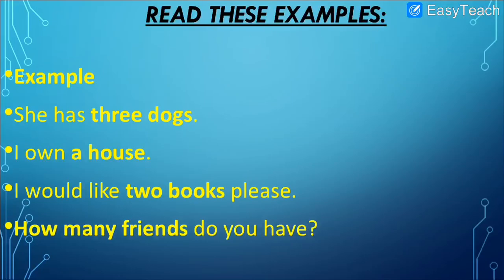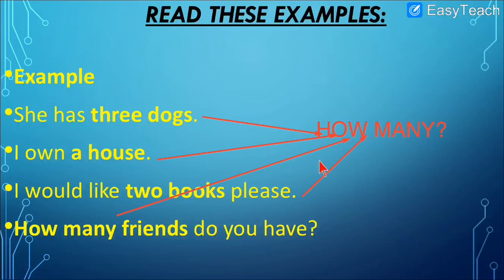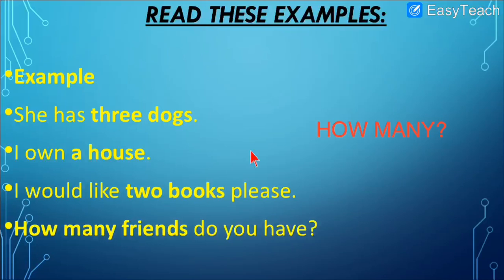Examples of countable nouns in sentences: 'She has three dogs' — how many dogs? Three dogs. 'I own a house' — how many houses? One house. 'I would like two books please' — how many books? Two. 'How many friends do you have?' — I have four or six friends. Everywhere you ask 'how many' — dogs, houses, books, friends — all are countable nouns.